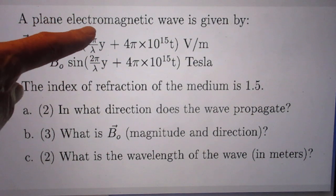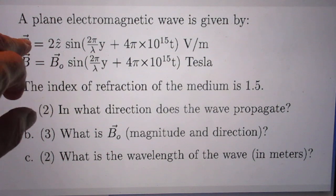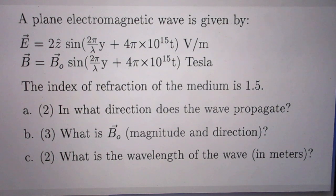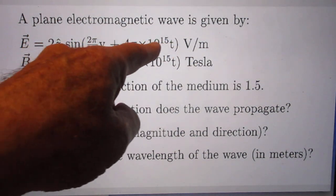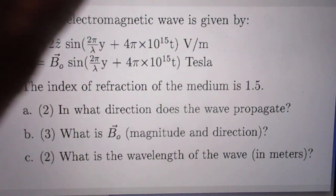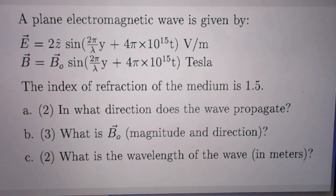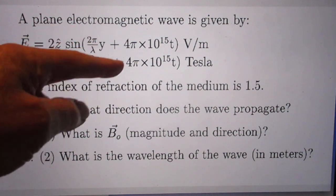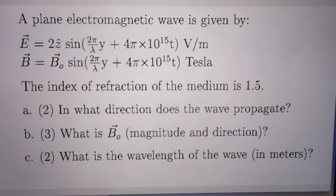A plane electromagnetic wave is given by the E-field vector, which is 2Z-hat — the unit vector in the Z-direction — and then the sine of this function with a time term. The E-vector is in volts per meter. The associated B-vector, connected through Maxwell's equations, is B0, and then again the same sine function. The unit is Tesla.